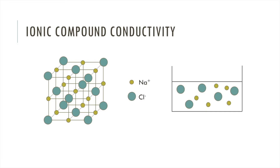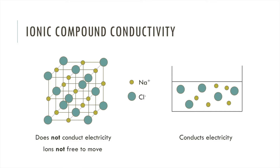To understand why, let's look at sodium chloride or salt. On the left is solid sodium chloride — if I hook that up to a circuit with a light bulb, the light wouldn't turn on; it doesn't conduct electricity. On the right is sodium chloride dissolved in water — this time if I connect a circuit the light would turn on. The difference is that in the solid the ions are not free to move so they can't carry a charge, whereas in the solution the ions are free to move so they can carry a charge and complete a circuit.